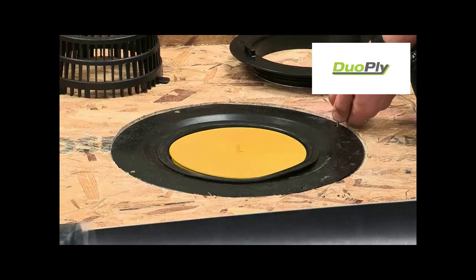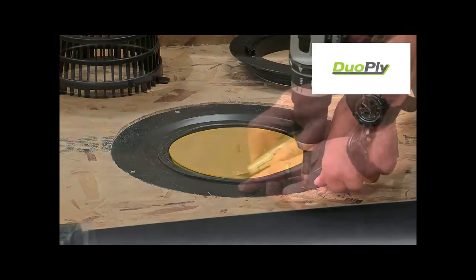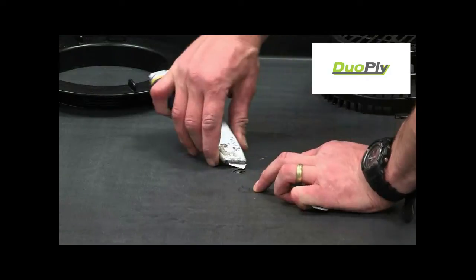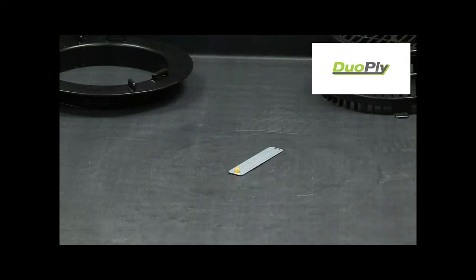Ensure the yellow blanking plate is in position prior to installing the membrane. This helps to locate the drain once the membrane is installed and allows the use of the cutting guide.